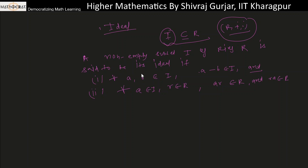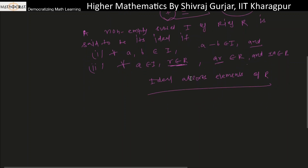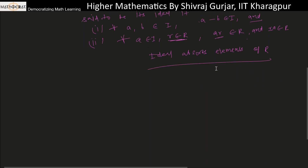Both conditions must be satisfied — it is 'and', not 'or'. The second condition says that if we take an element a from I and an element r from the ring R, then both a·r and r·a should lie in I. We can say that the ideal absorbs elements of R, whereas a subring does not absorb elements of R.